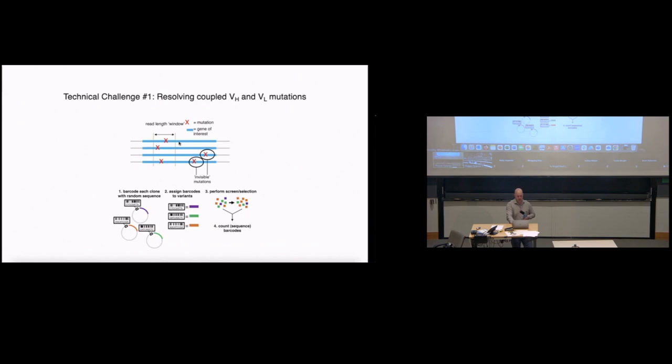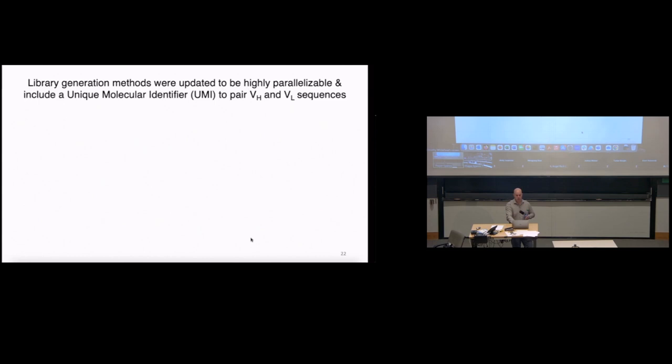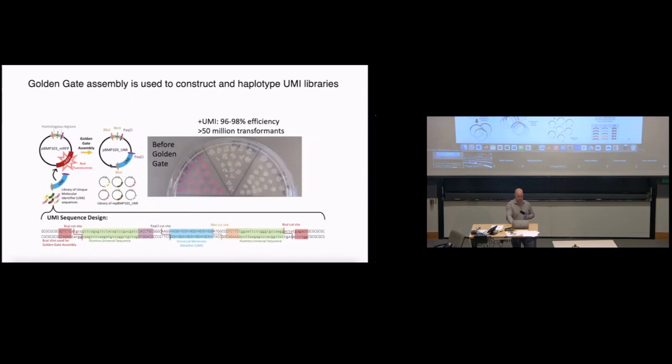The really key things that we had to solve are two technical challenges. One is if you make mutations at both the variable heavy and the variable light gene, you have to find a way to couple those. For these kinds of measurements, we can use short read DNA sequencing, which limits us to about 300 or 400 nucleotides in a stretch. If mutations happen outside of that read length window in this figure, then you don't see them. So we had to find a way to get to be able to go about 2,000 nucleotides, not just 400.